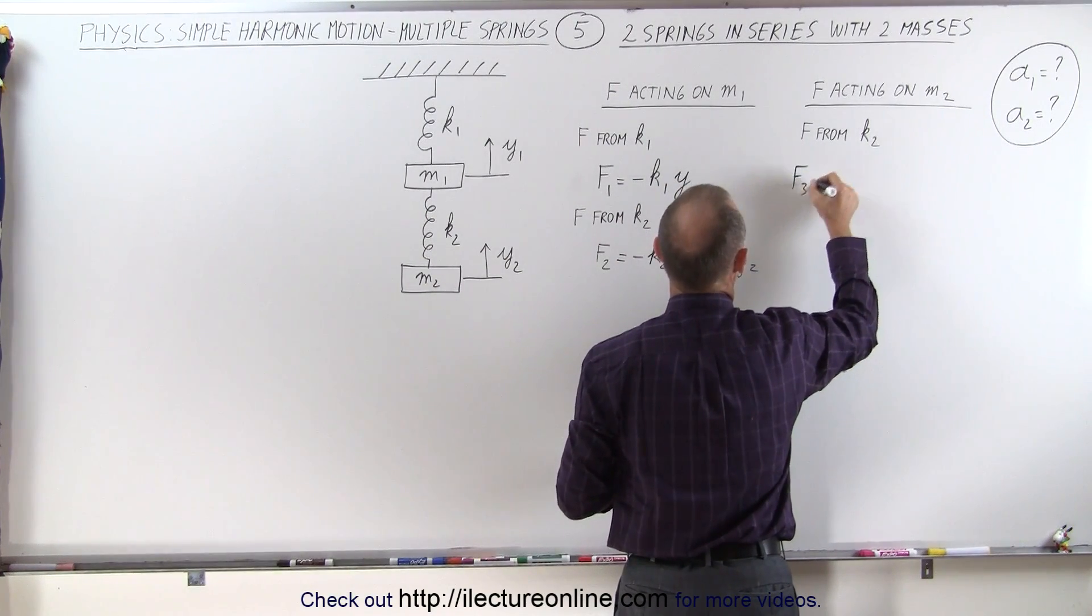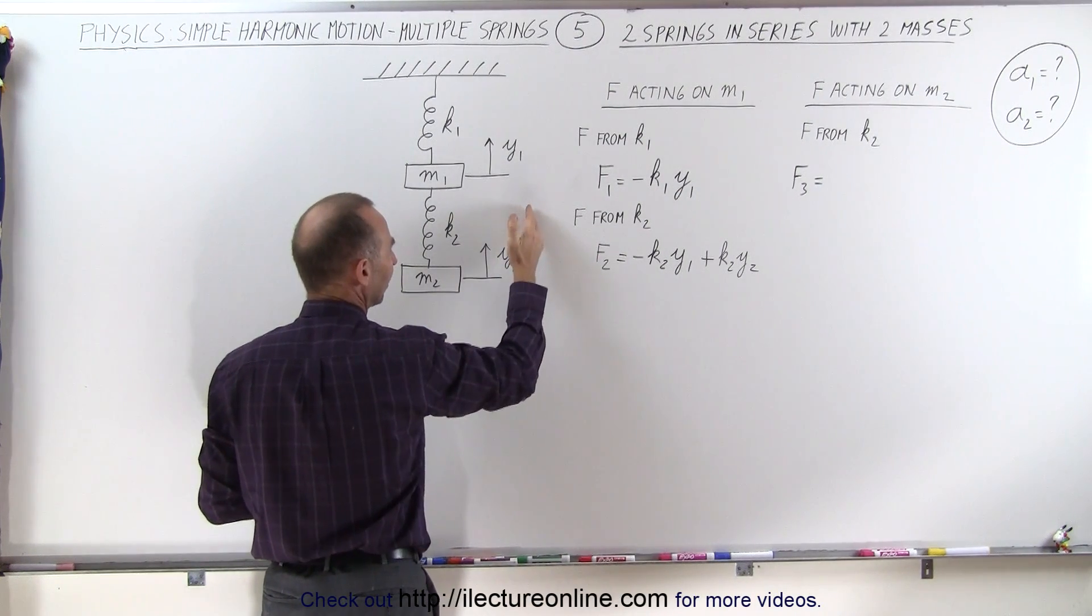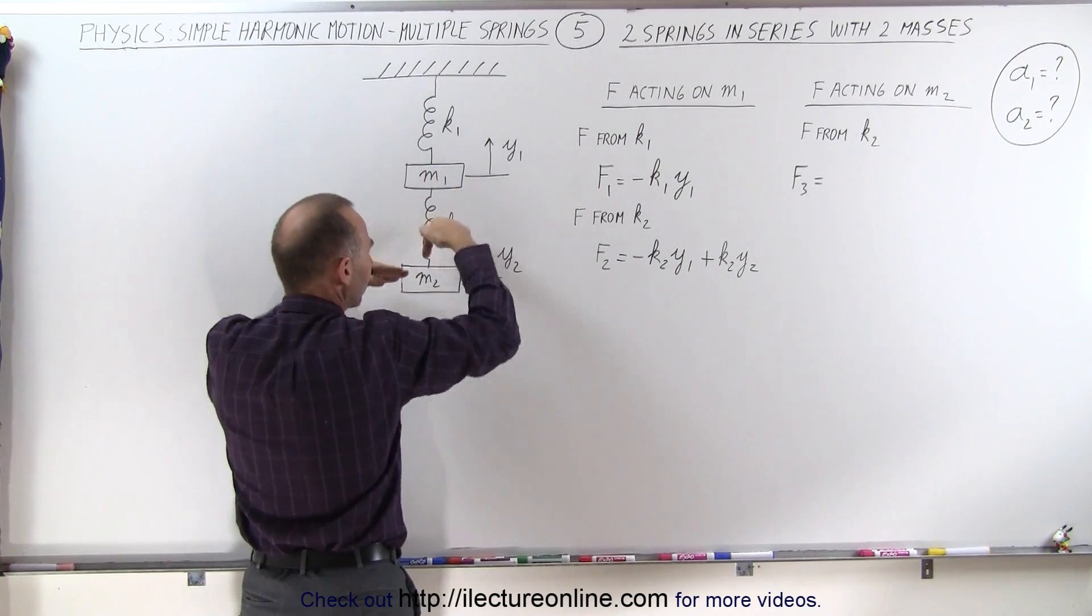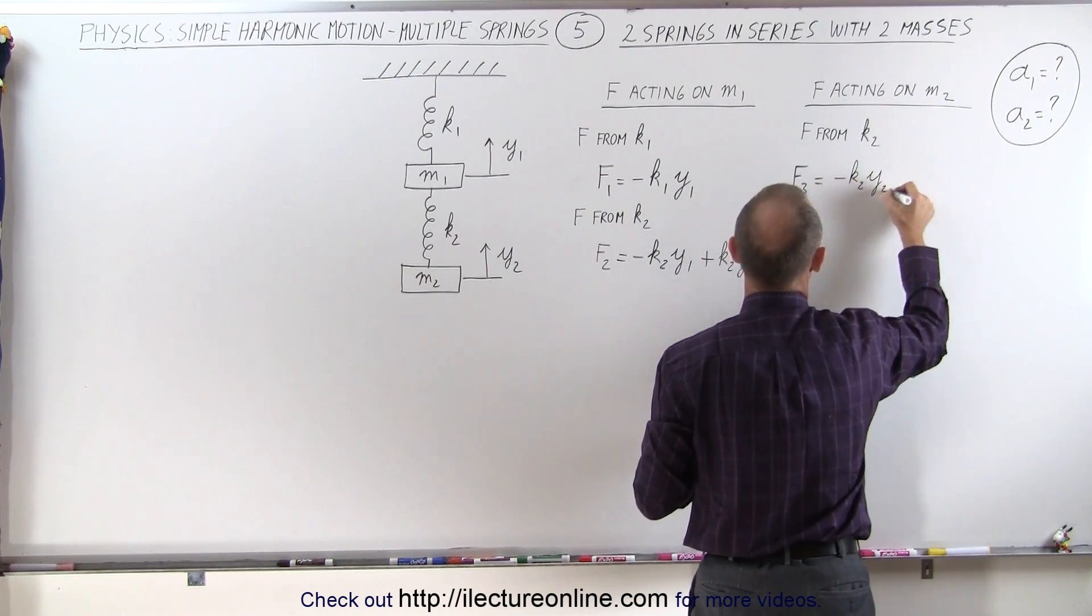So let's call that f3. And first of all, let's look at what happens when m2 moves. When y2 is positive, it goes up, it compresses the spring, which means that the spring will be pushing downward, so it will be minus k2 times y2.